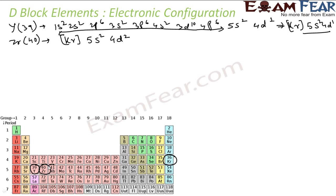The next element is Nb 41, niobium. This is also I can take krypton 36, I'm done with 36, and then 5s2, 38, left with 3, 4d3.